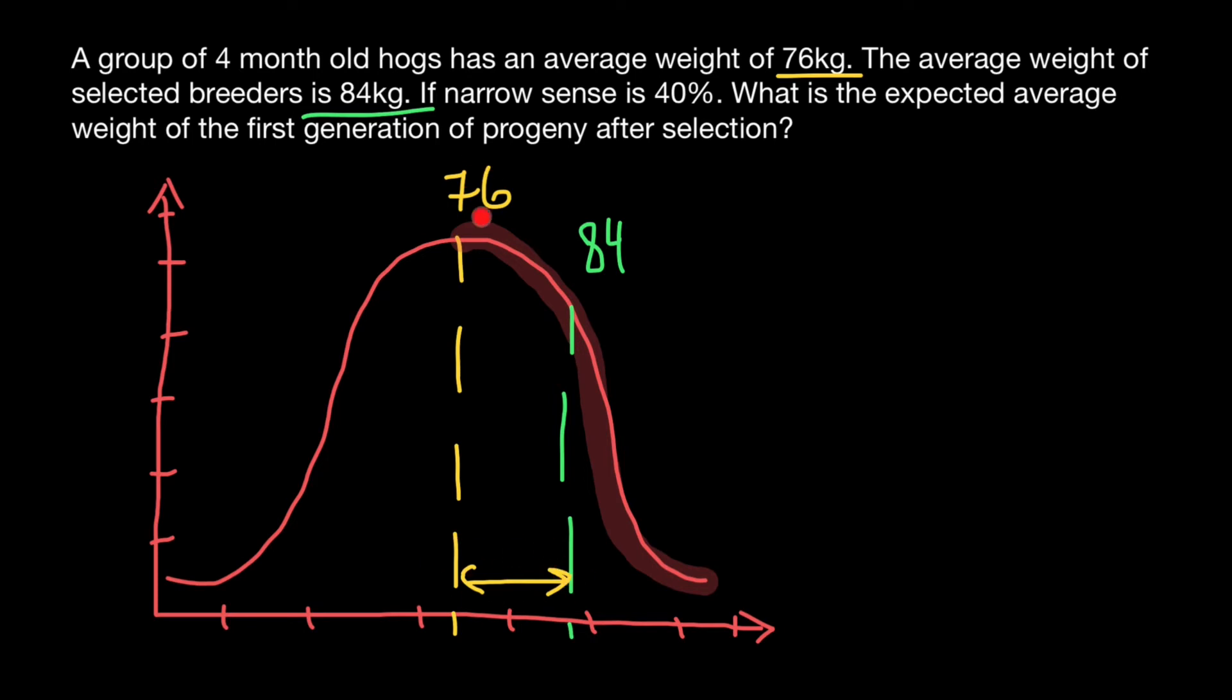It has to be inside between 76 and 84 kilograms. In order to find the mean of the F1 generation, which we also call response to selection, we use R for response of selection. And we are going to use this formula, where h squared, or narrow sense heritability, we have to multiply by selection differential. And what is the selection differential in our case? This is going to be the difference between 84 and 76, so mean of the selected parents and mean of the population.